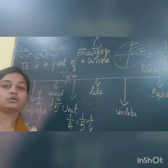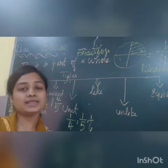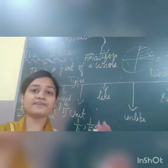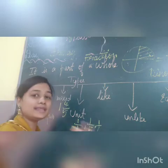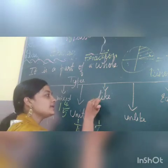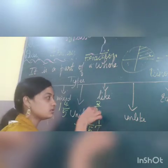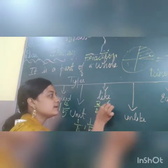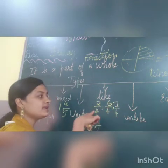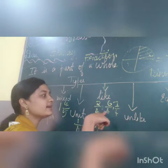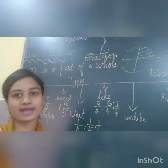Now, like fraction. Like fraction means two or more fractions having the same denominator — the denominator is the number which is down. For example, 2 by 4, 6 by 4, 7 by 4 — if you see here, all the denominators are 4, which is the same. Such a type is called like fraction.